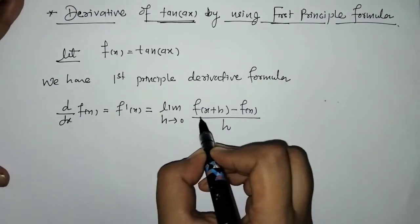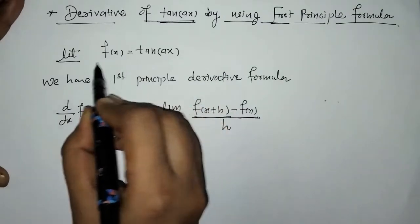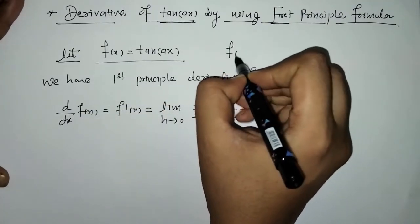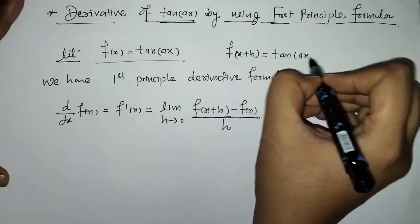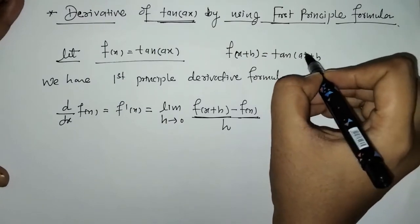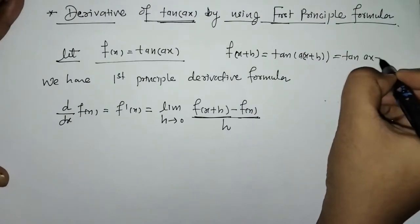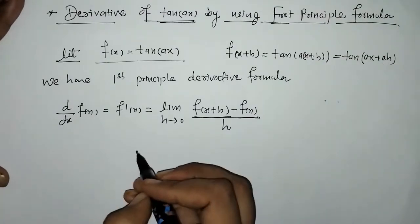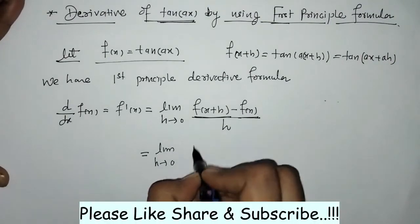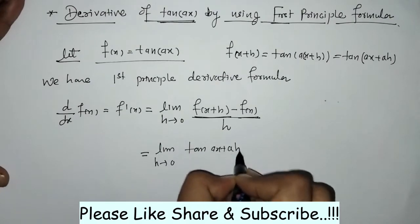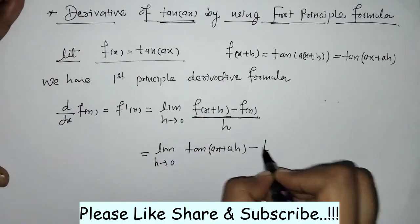Now we have to put in the values of f of x plus h and f of x. Here f of x is equals to tan of ax, so f of x plus h will be tan of ax plus ah. We put these values in, so we have tan of ax plus ah minus tan of ax, upon h.